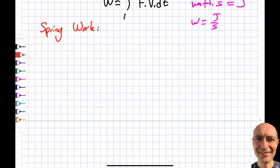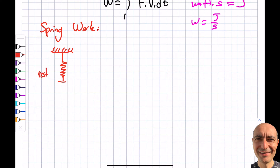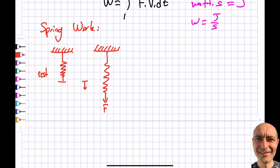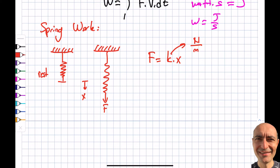Next: spring work. In thermodynamics we deal with this too — for example, I'll introduce a piston-cylinder system that's sometimes connected to a spring. I have the resting position of the spring, and if I pull it, it goes a distance x. The force is equal to the spring constant k times x. The units of k are newtons per meter in SI, or pound-force per foot in British units.